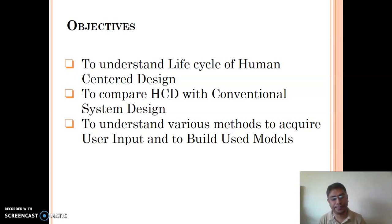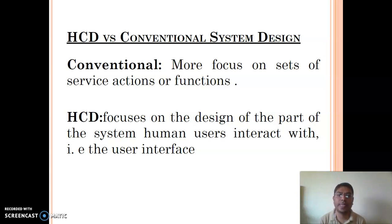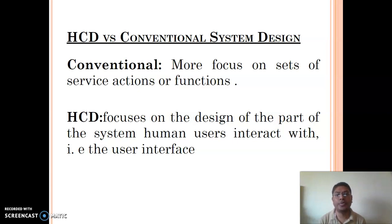First we will check what is different between human centered design and conventional system design. In conventional system design, more focus is on what kind of services or actions are necessary to provide services to the user. More focus is on services and functions, and very little focus is on the user. User entry is only in the first stage and the last stage — in between there is no role of the user. But in human centered design, during every phase there is a role of the user.